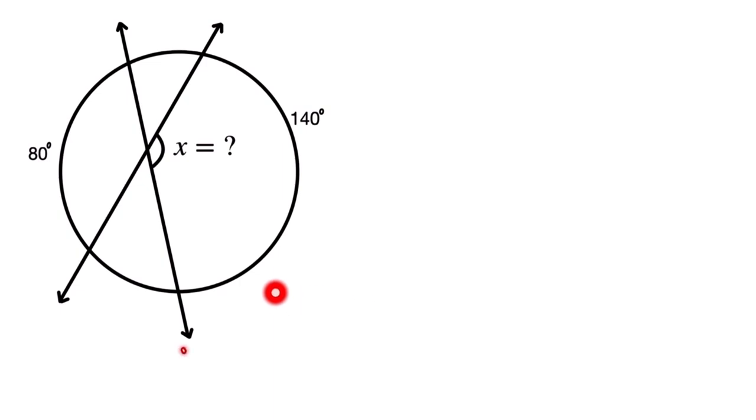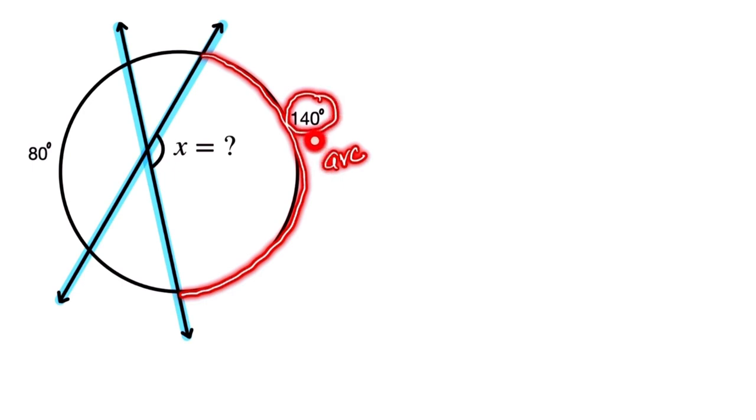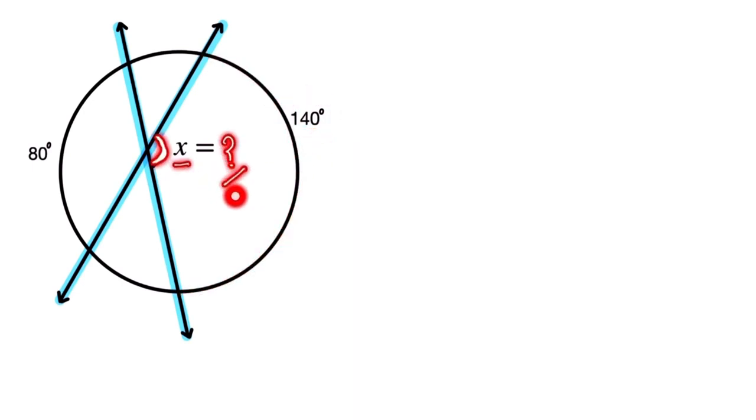Let's see the solution. This is our question. Here the two intersecting lines between the circle, this arc is 80 degrees. And look at the bigger arc, this one. This arc is 140 degrees. We have to find the value of x, the angle between two intersecting lines. So how can we solve this?